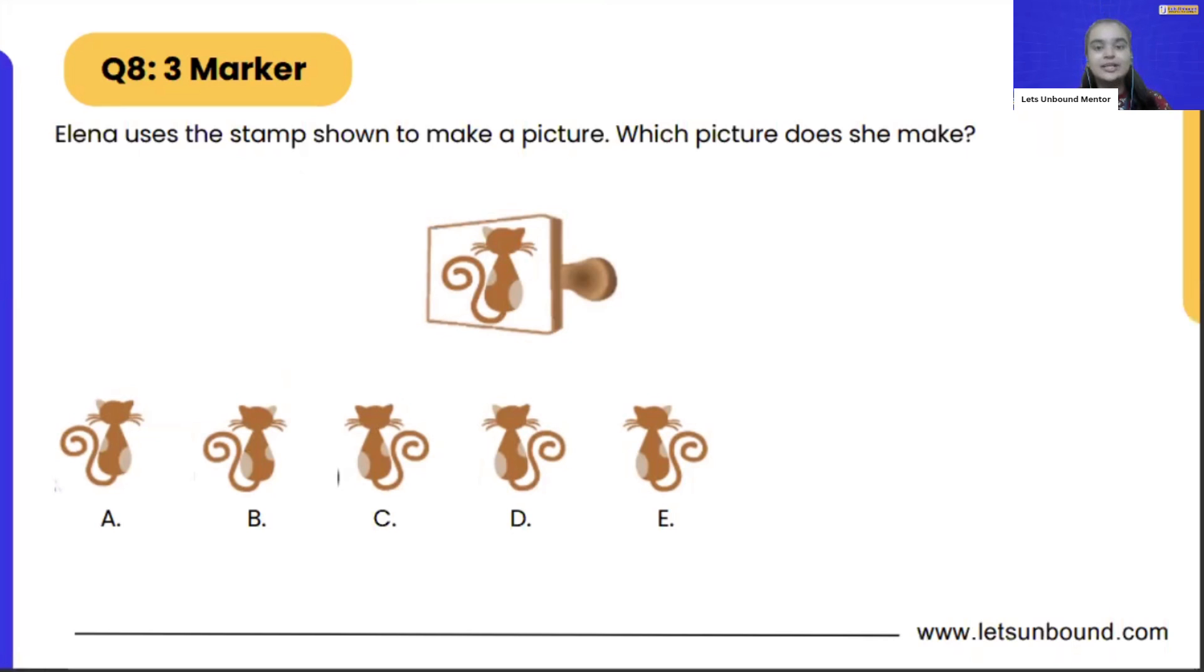Elena uses the stamp shown to make a picture. Which picture does she make? We have all used stamps, right? What happens if we are pasting a stamp on our notebook? For example, if this is the stamp I'm pasting on my notebook, it will show the mirror image of it.